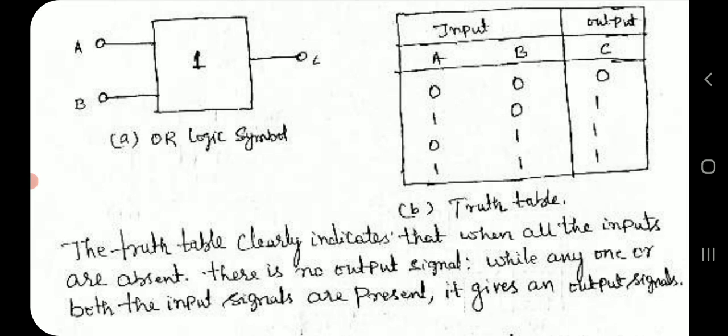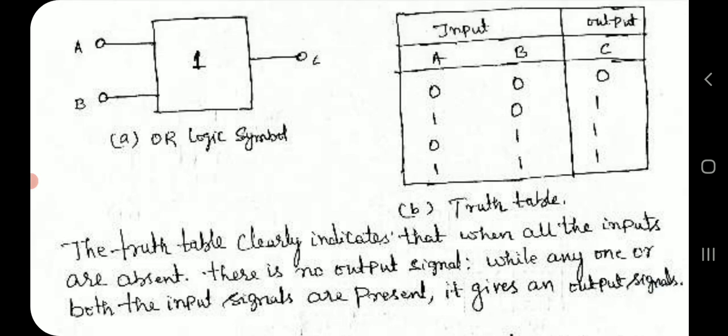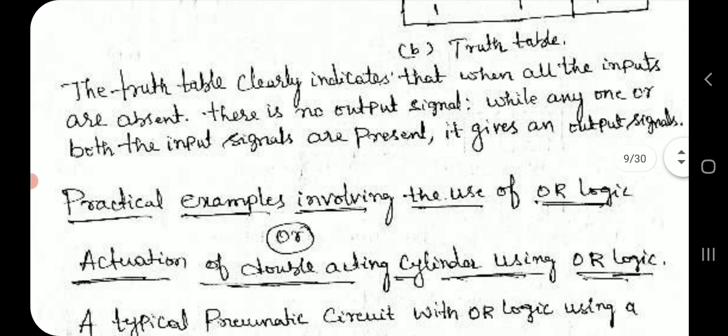The truth table clearly indicates that when all inputs are absent, there is no output signal. While any one or both of the input signals are present, it gives an output signal.